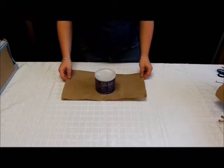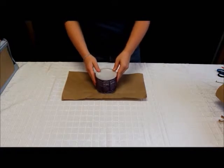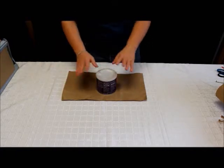The next object we are going to wrap is a cylinder and this could be any object, for example a candle or even a jar of jam.